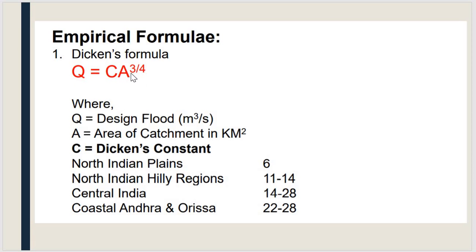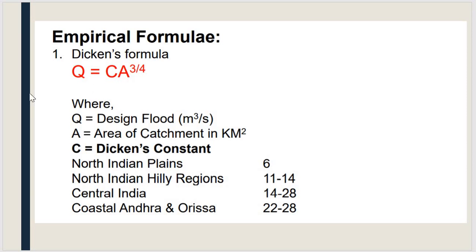In Dickens formula, Q is the design flood, A is the catchment area, and C is the Dickens constant, whose value can be taken from a tabular column. This formula is mainly applicable in North India. In North Indian plains, C = 6; North Indian hilly regions, 11 to 14; Central India, 14 to 28; and coastal Andhra and Orissa, 22 to 28.